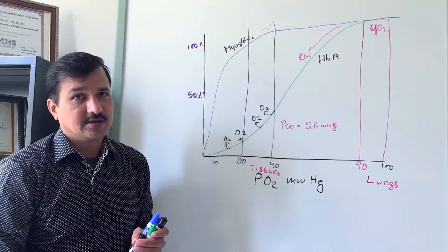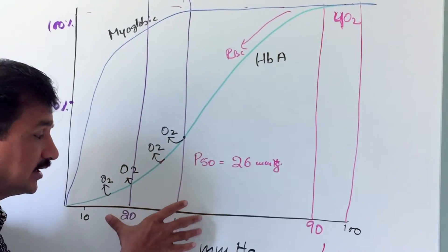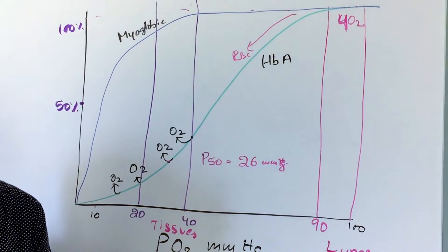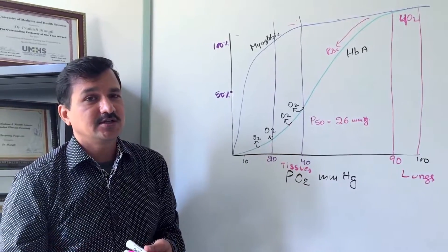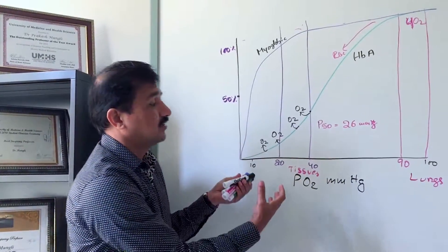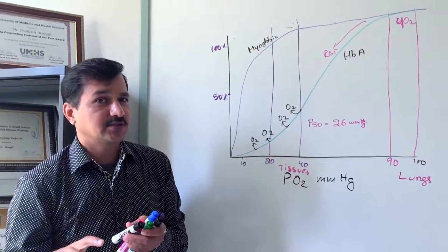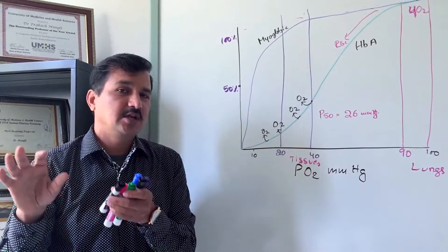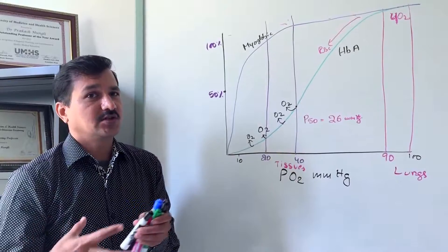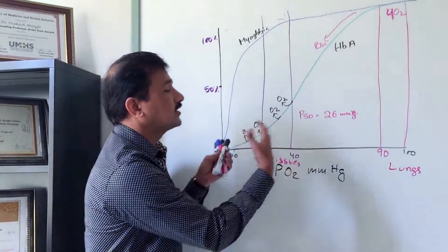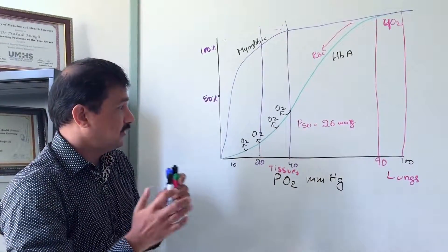Oxygen unloading is not only dependent on partial pressure. It is also influenced by tissue pH, hydrogen ion concentration, carbon dioxide concentration in peripheral tissues, and the concentration of 2,3-BPG in red blood cells. These factors are explained further in the Bohr effect video on the YouTube channel.